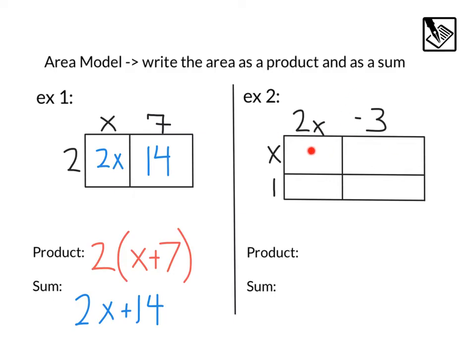Here's our second example. First, I'm going to fill out the rectangles. Looks like we've got x times 2x, that's 2x squared. 1 times 2x, that's 2x. x times negative 3 is negative 3x, and 1 times negative 3 is negative 3.